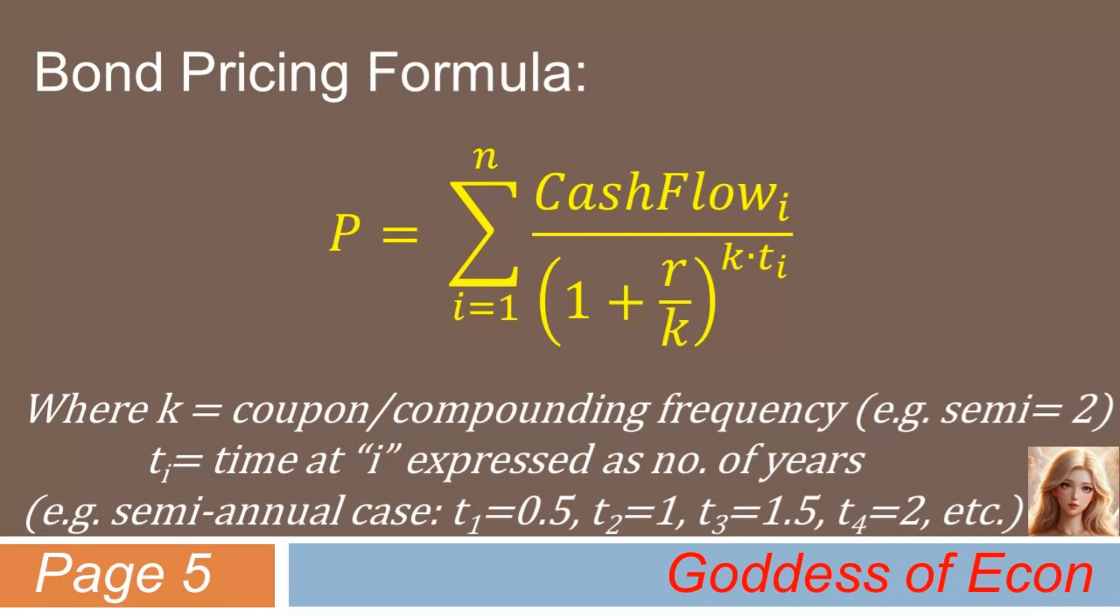And t i introduced here represents the time at which the cash flow i is received, expressed in years. For example, in the semi-annual case, t1 equals 1 half, t2 equals 1, t3 equals 1 and a half, and t4 equals 2. In the quarterly case, t1 equals 1 fourth, t2 equals 2 fourths or 1 half, t3 equals 3 fourths, and so forth and so on.